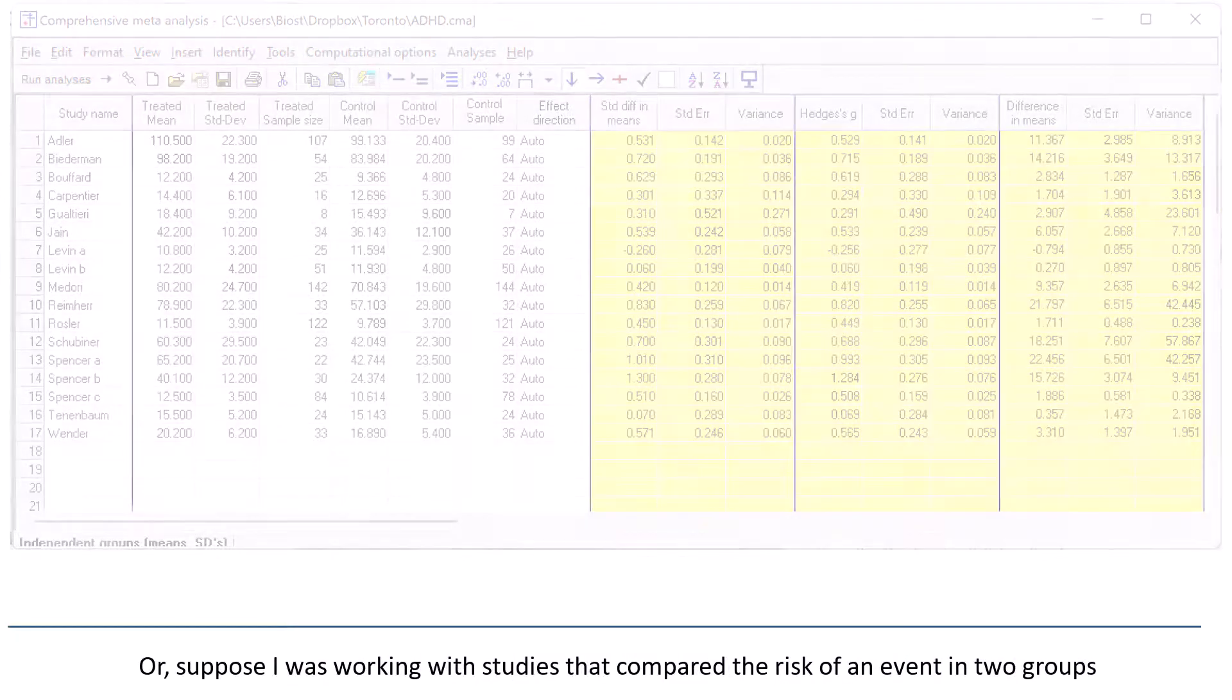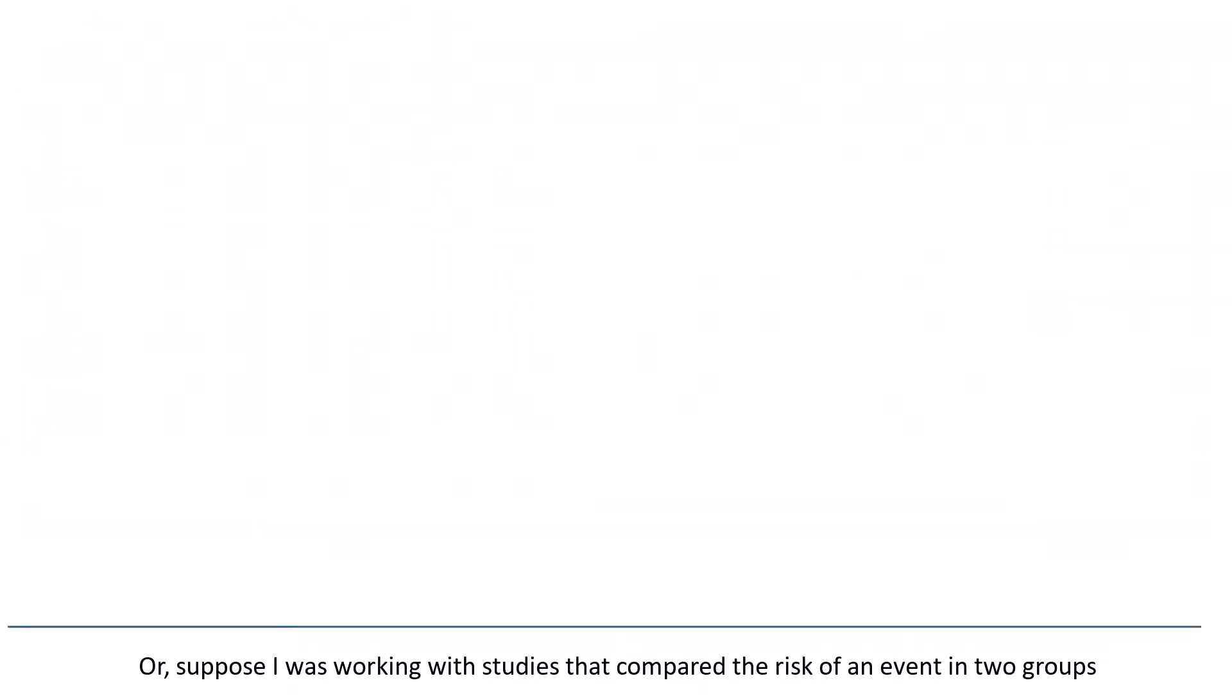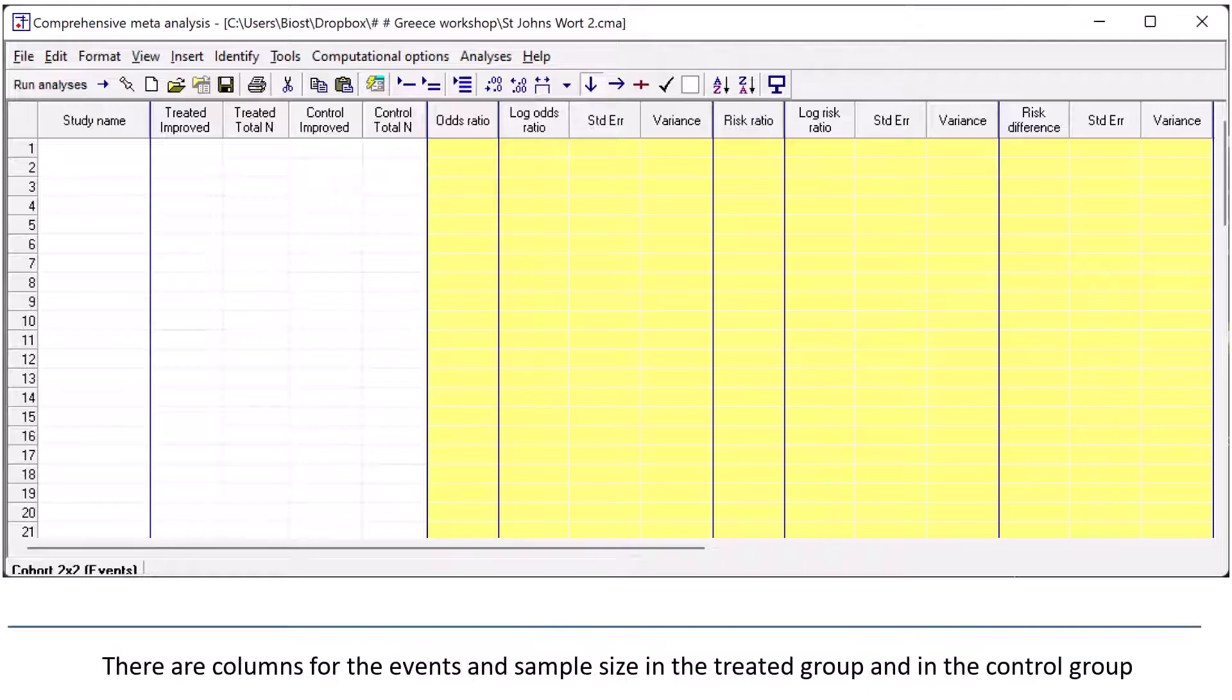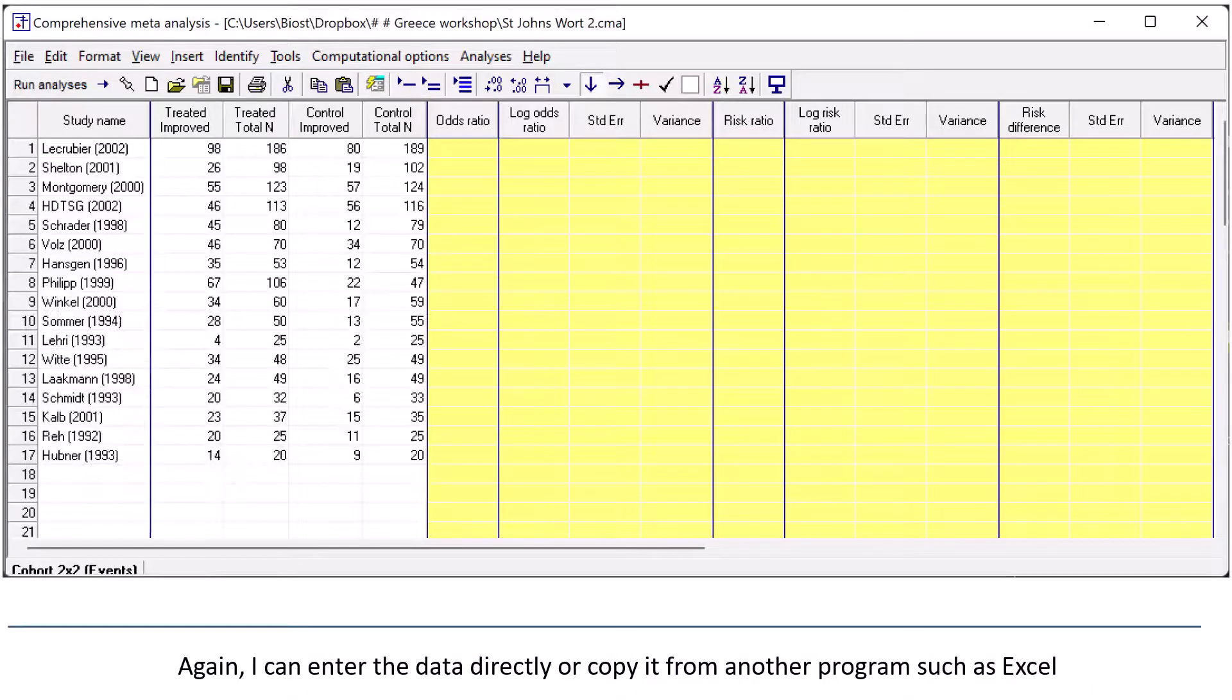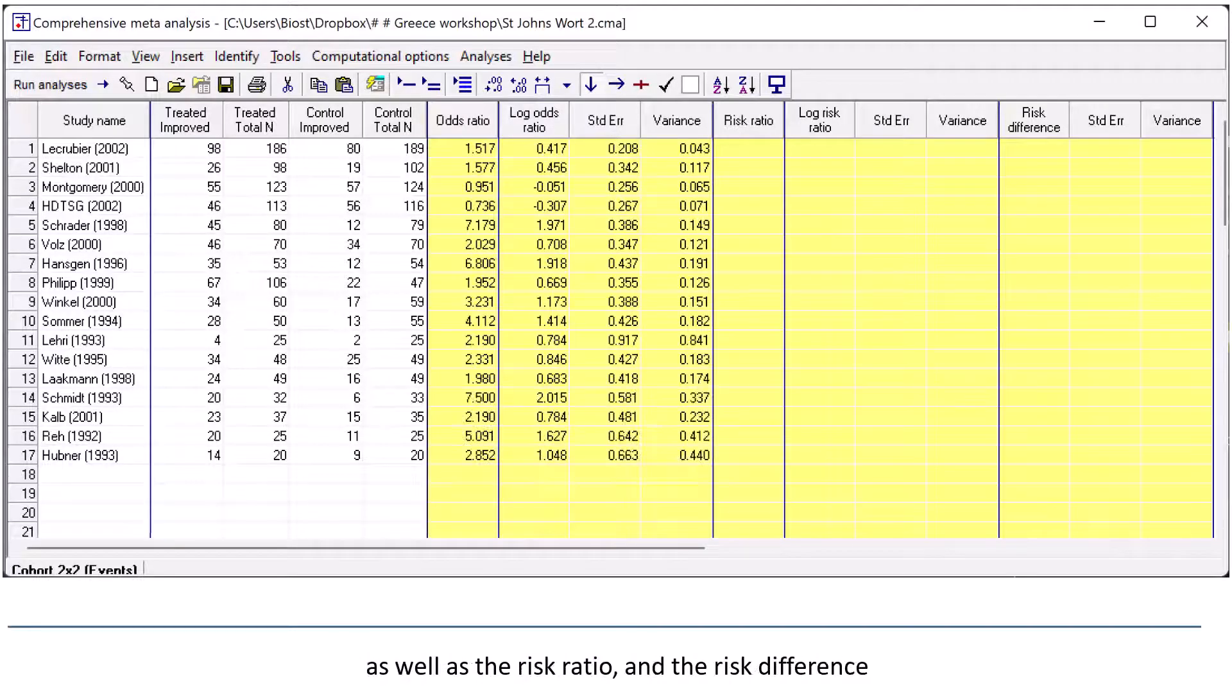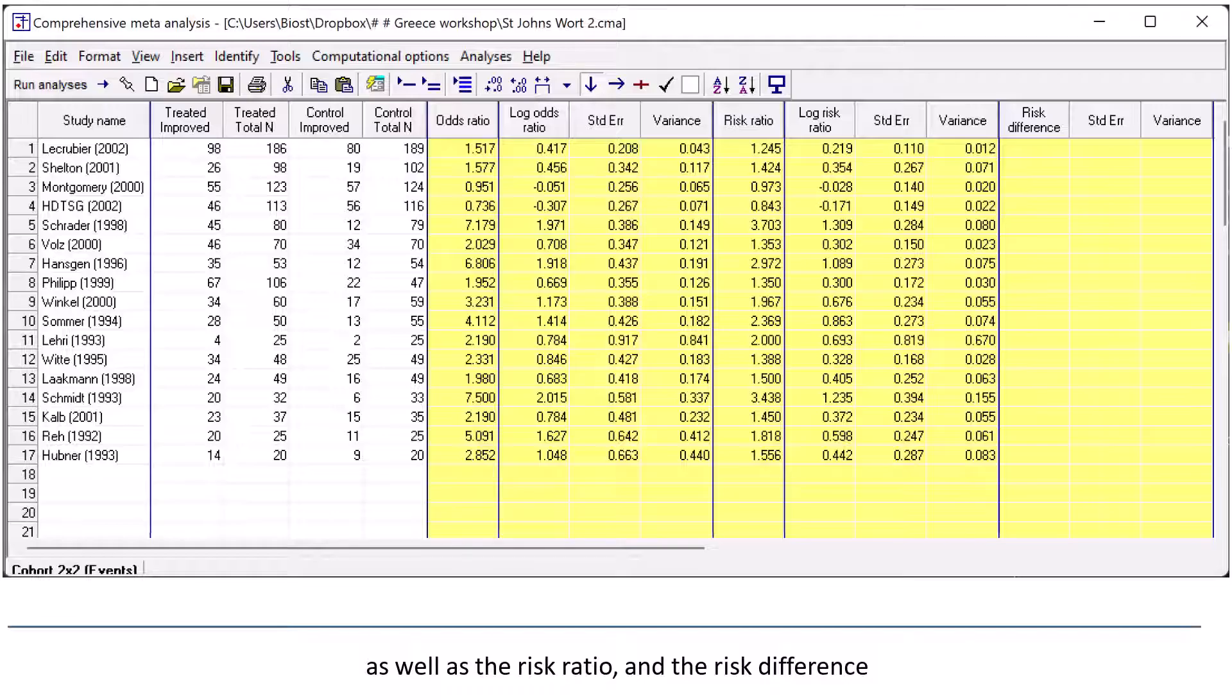Or, suppose I was working with studies that compared the risk of an event in two groups. The screen in CMA might look like this. Now, there are columns for the events and the sample size in the treated group and in the control group. Again, I can enter the data directly, or copy it from another program, such as Excel. In this case, the program computes the odds ratio, as well as the risk ratio, and the risk difference.